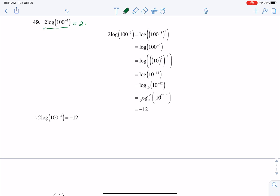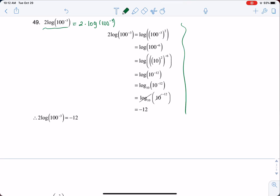I'm going to rewrite this as 2 times log of 100 to the negative 3. And then let's go ahead, and I'm just going to do some scratch work over here.